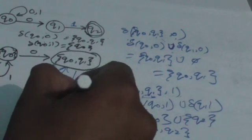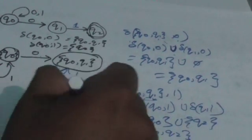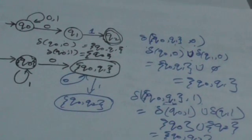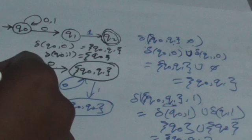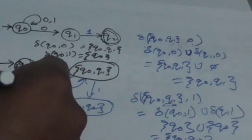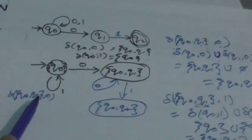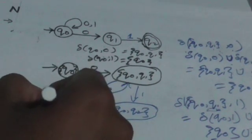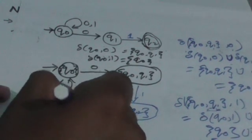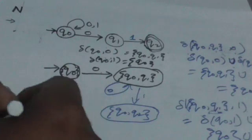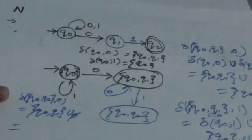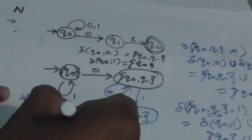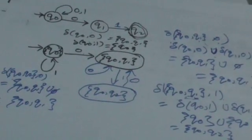Now find the transitions of new state {q0, q2} for input symbol 0. Apply 0 individually to each state: delta(q0, 0) gives {q0, q1}, and delta(q2, 0) has no transition, so it gives the empty set. Their union is {q0, q1}. So when you apply 0 to {q0, q2}, it jumps to state {q0, q1}.